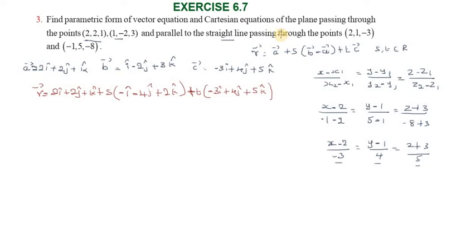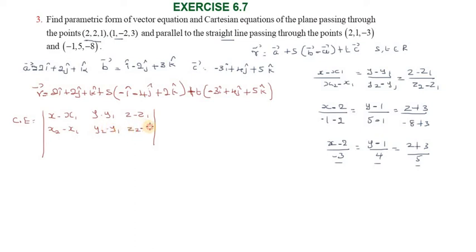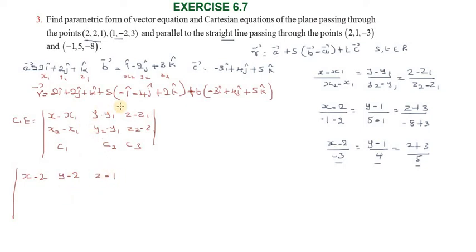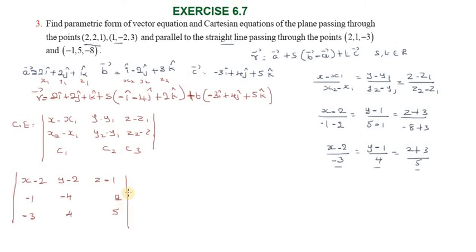For the Cartesian equation, we use the determinant form: (x minus x1), (y minus y1), (z minus z1) over (b1, b2, b3) over (c1, c2, c3). So x minus 2, y minus 2, z minus 1, then b components minus 1, minus 4, 2, and c components minus 3, 4, and minus 5.